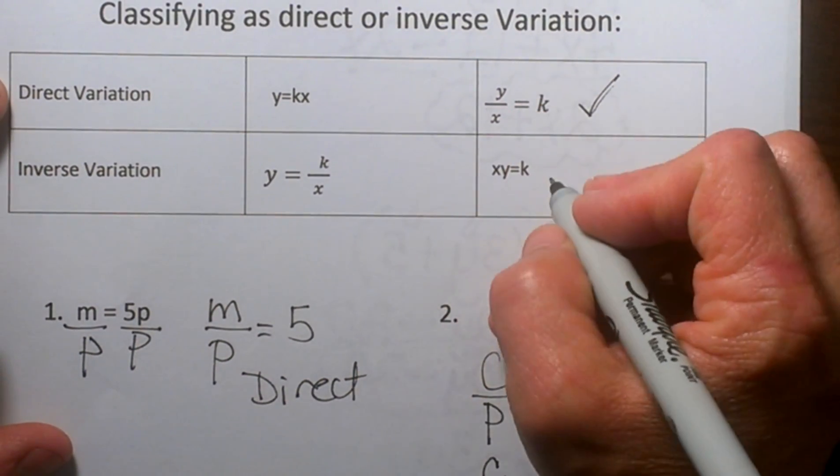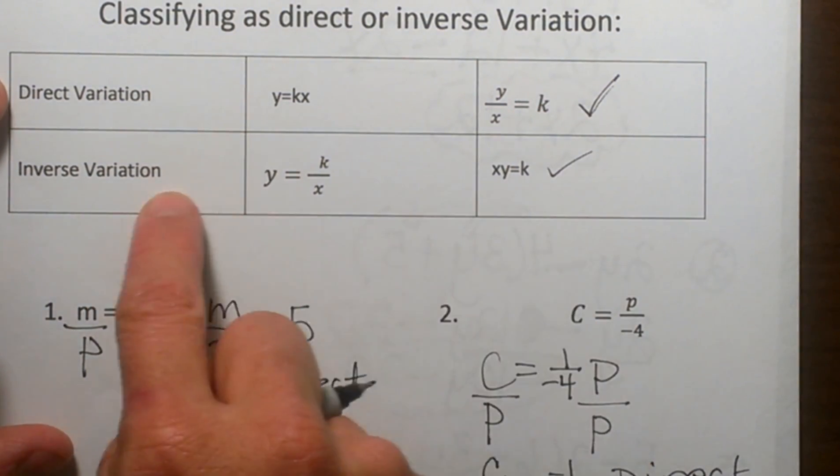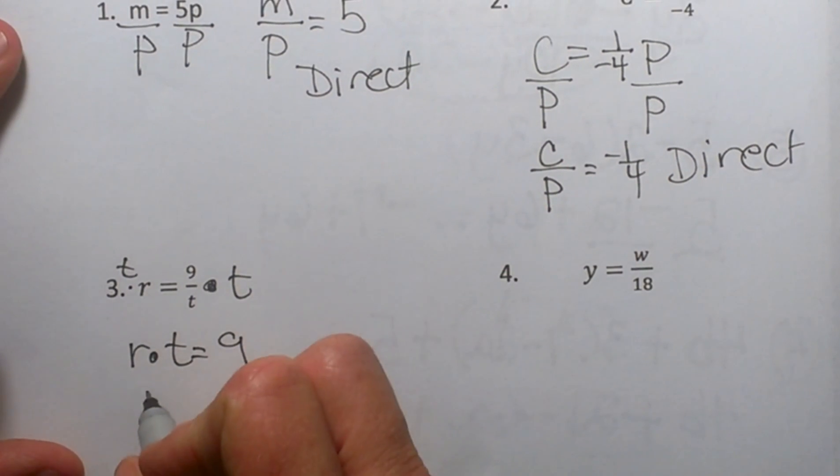So let's go over here. Which one is it? It is the inverse. It is that inverse variation. So this one is an inverse.